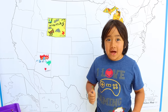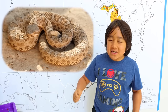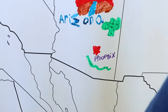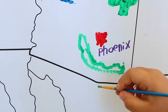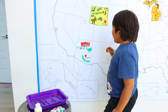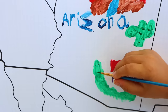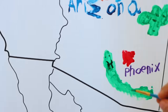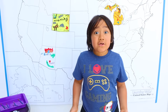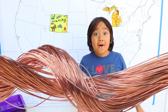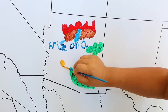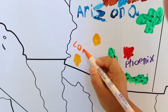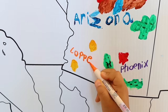Since Arizona has a lot of deserts, and deserts have rattlesnakes, I'm going to draw a rattlesnake. Maybe the tail goes here, and it can go up here, then the face. I'm going to put the eyes and the mouth, and it has little fangs, and then lots of dots. Did you also know that Arizona finds a lot of copper? They mine a lot of copper. C-O-P-P-E-R.